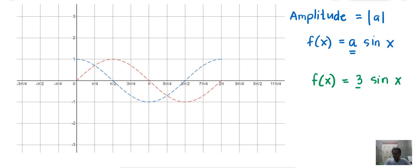So, 3 is multiplied here. Therefore, the amplitude is equal to 3. This means that the highest point of the function now becomes 3 and the lowest point now becomes negative 3.